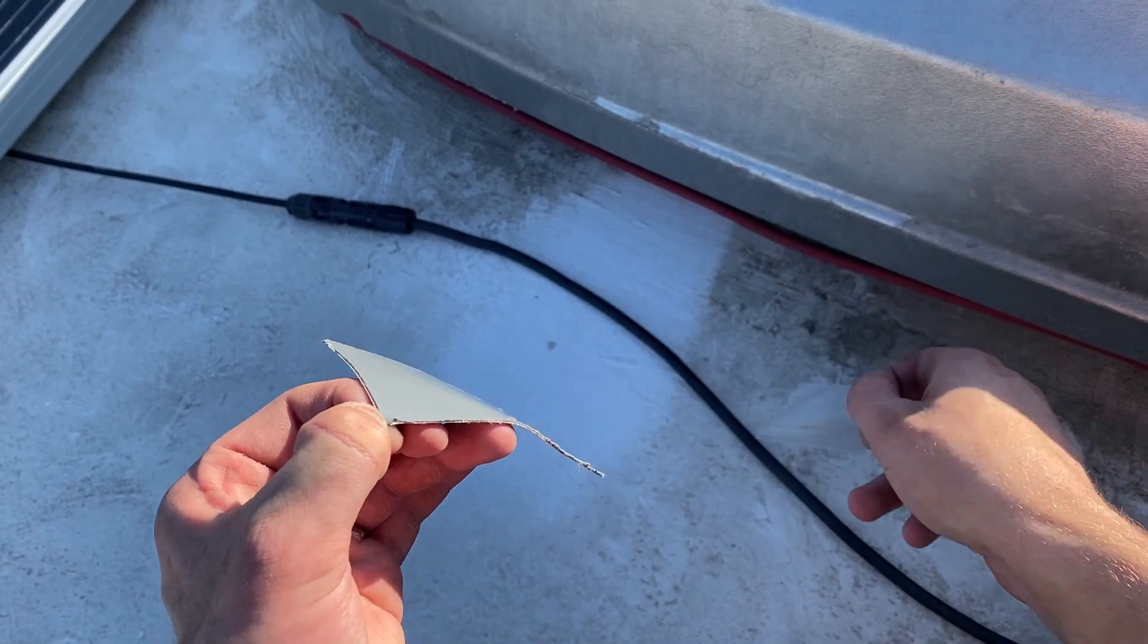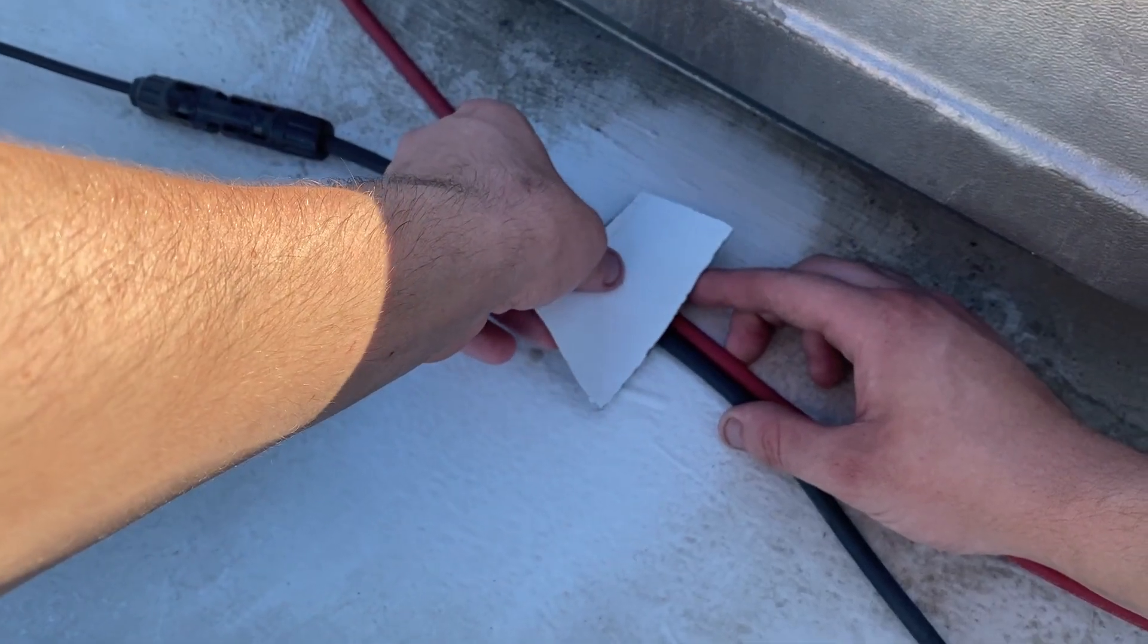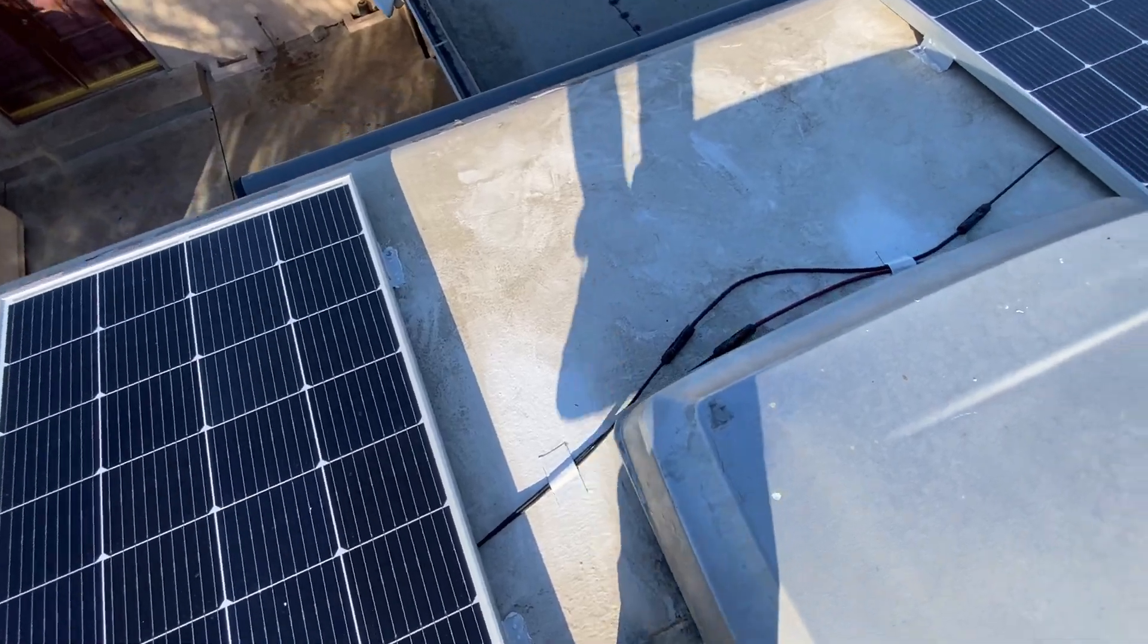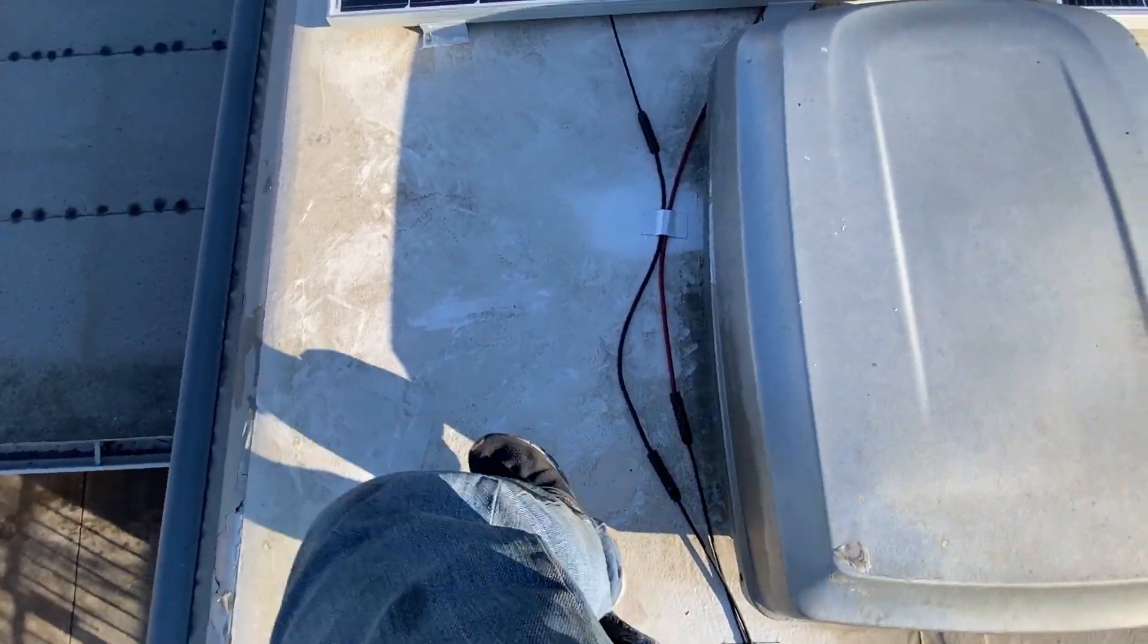I then mounted the wires to the rooftop with a roof tape sealer. This stuff is amazing at stopping leaks and keeping things permanently mounted to the rooftop.